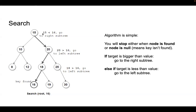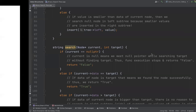For example, since we are searching for 16 and 16 is bigger than 15, we go right. Then if the target is less than the node's value, you go to the left sub-tree — here we go left because 18 is bigger than 16. Once you've found the key, you stop. You stop either when the node is found or when you reach a null pointer, meaning you couldn't find the node with the given value. There are two conditions when the algorithm stops.